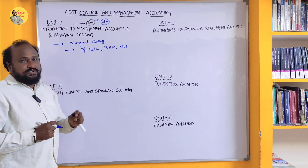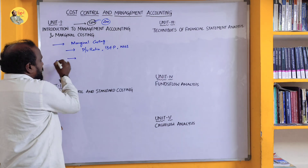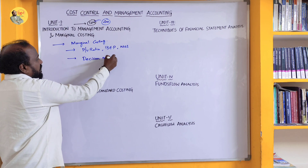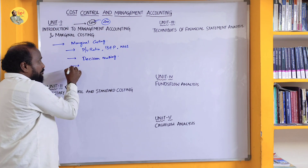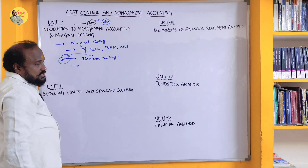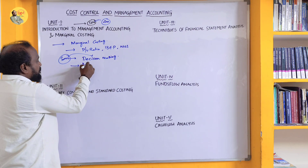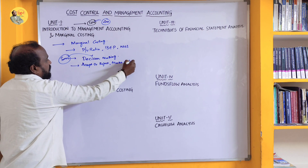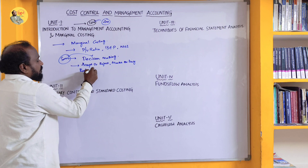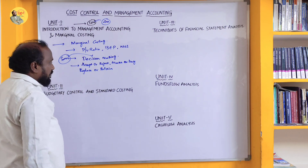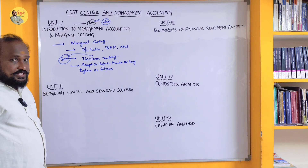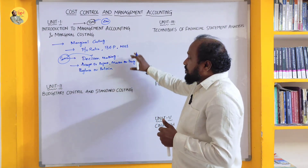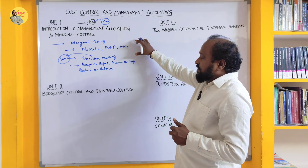If you want a video on Marginal Costing, comment in the comment box and I'll make a video for it. Apart from this, there will be another choice question from Decision Making. From Decision Making, a sum will compulsorily appear. The key decisions are: Accept or Reject, Make or Buy, and Replace or Retain. Based on these topics, a sum will come for sure.